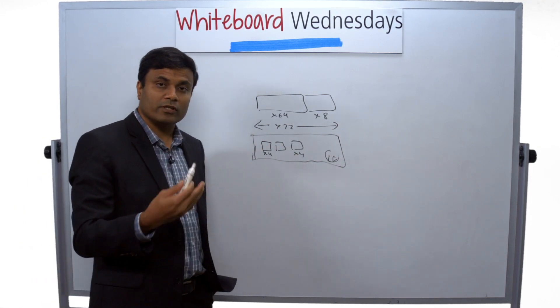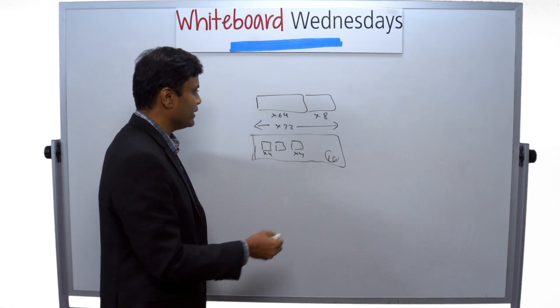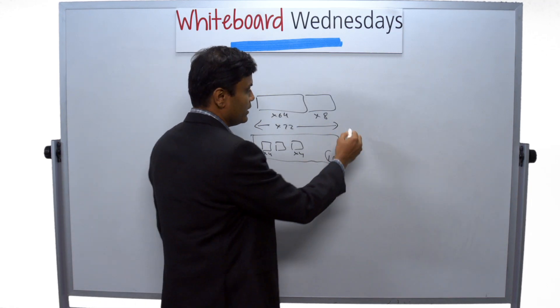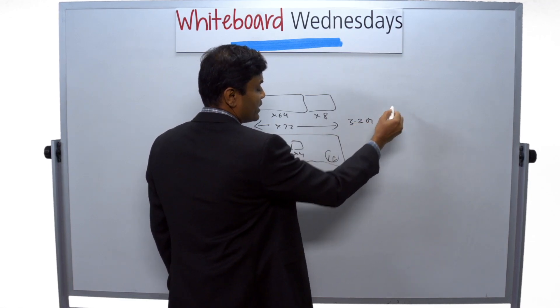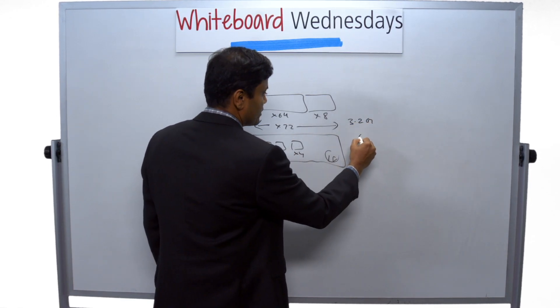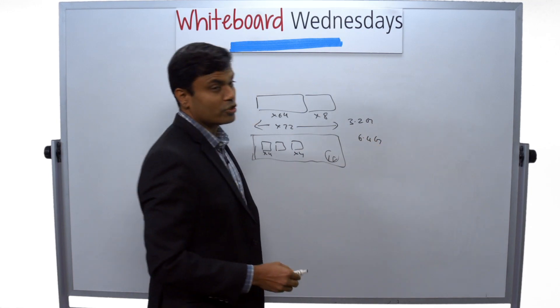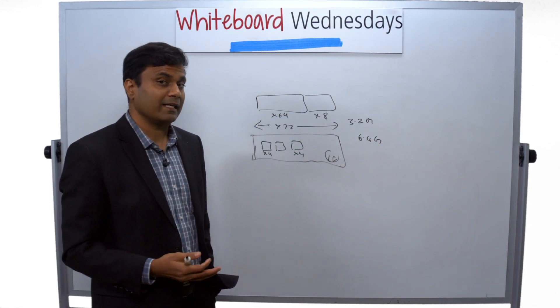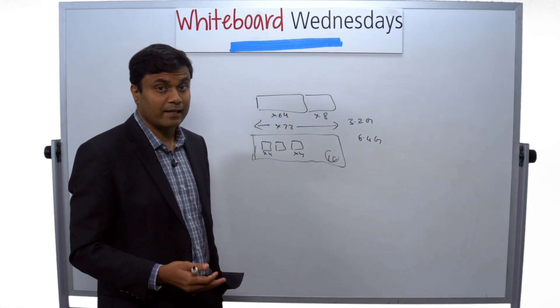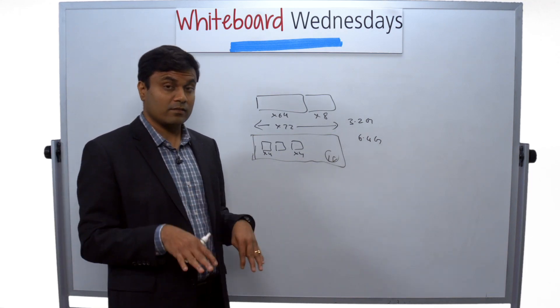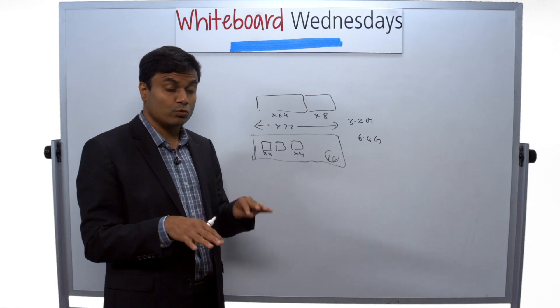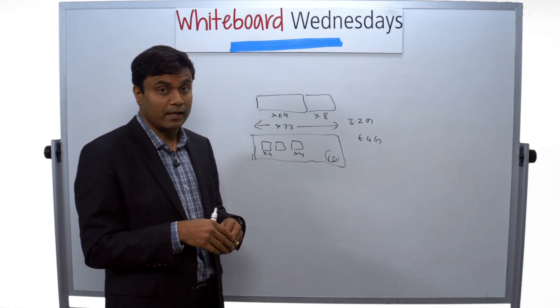Now what is happening in the next generation of server memory is the data rates are going to double. DDR4 maxes out at 3.2 gig. If you think about the potential DDR5 speeds, they're going to be at 6.4 gig. Now the issue is the DRAMs are not fundamentally getting any faster. The circuits are not getting faster. The only way to get twice the bandwidth is to have multiple simultaneous accesses to the DRAM at the same time.